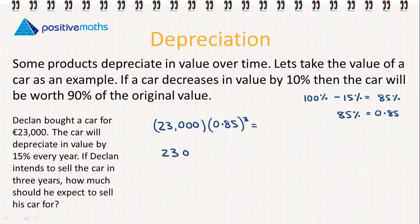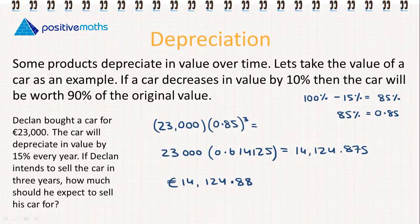23,000 × 0.614125 = 14,124.875, so he should expect to sell his car for €14,124.88. Just noting, we always have to use our units, and when we're dealing with money, we always round to two decimal places.